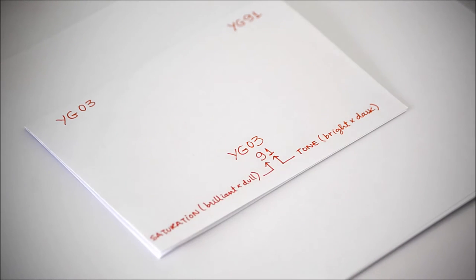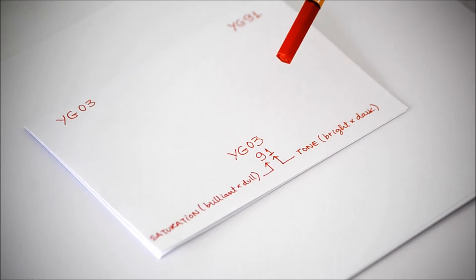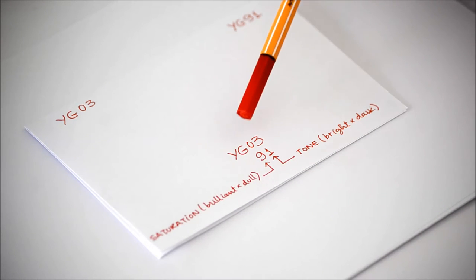So before I start I would just explain a bit of the color system in the Copics. It's not that difficult. The first two digits, the letters, they talk about the family name of the colors. So in this example we have a yellow-green and two numbers that we should read separately.